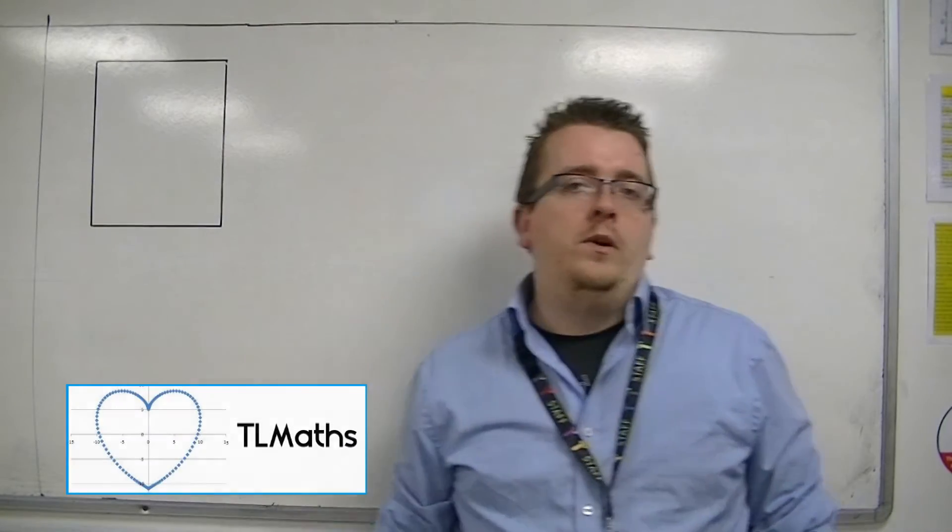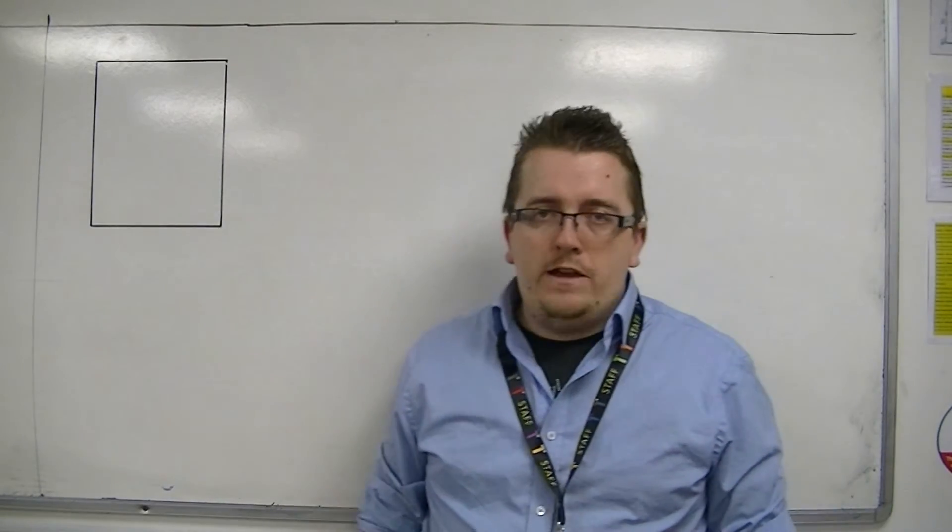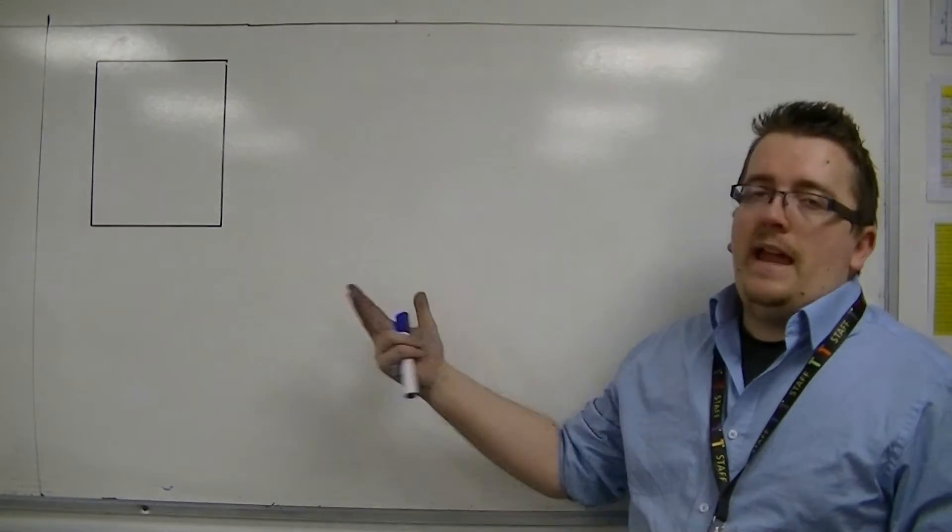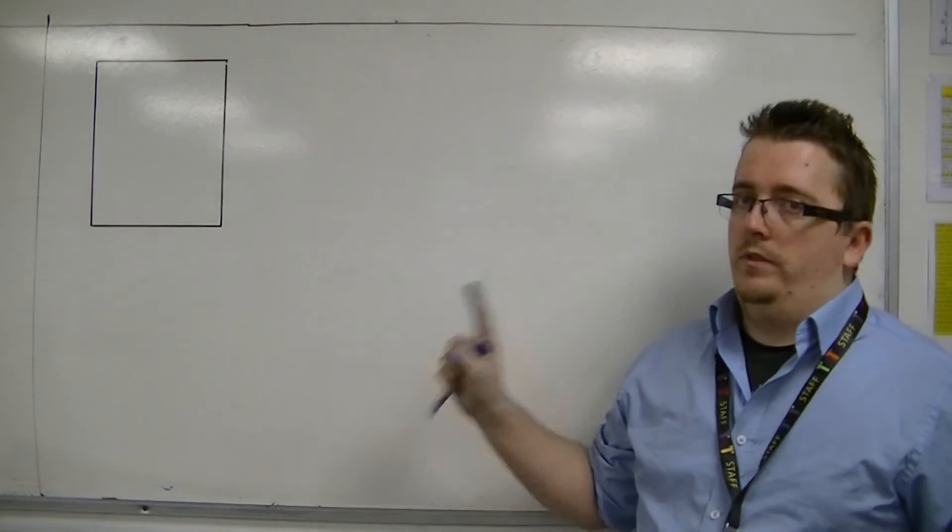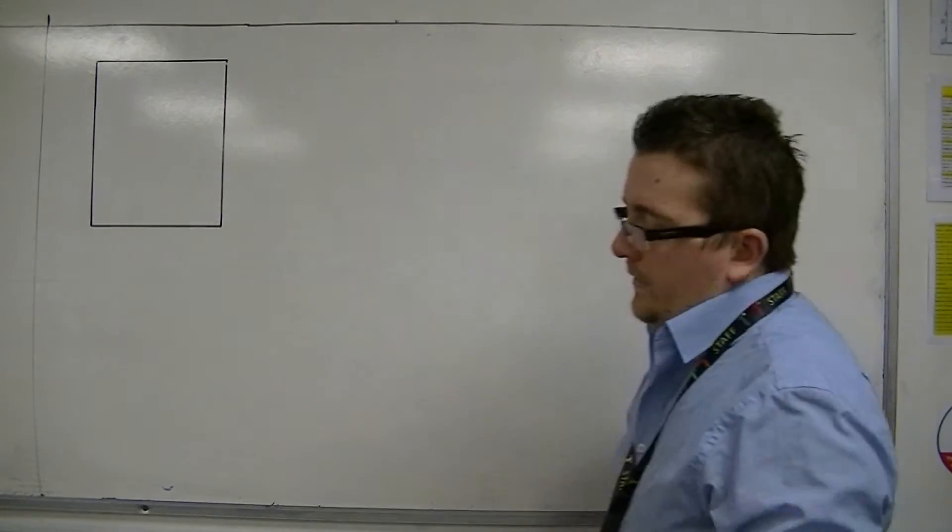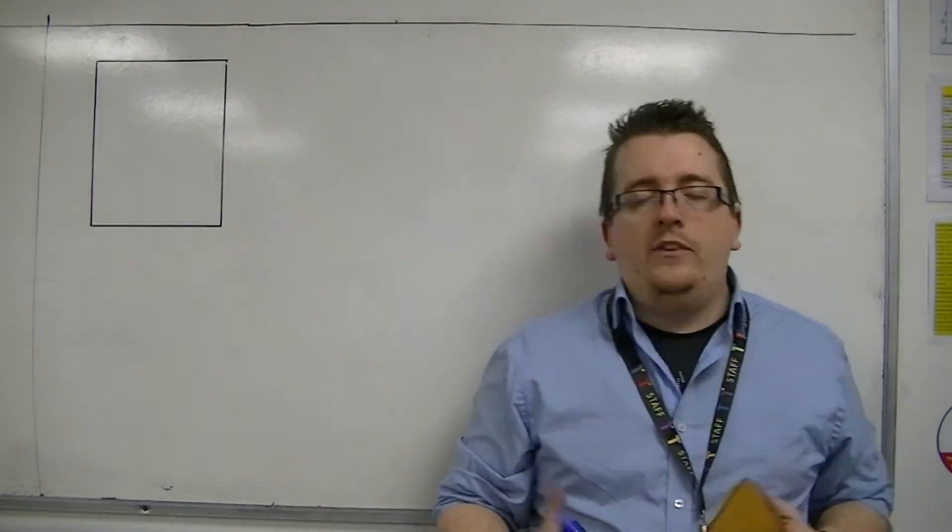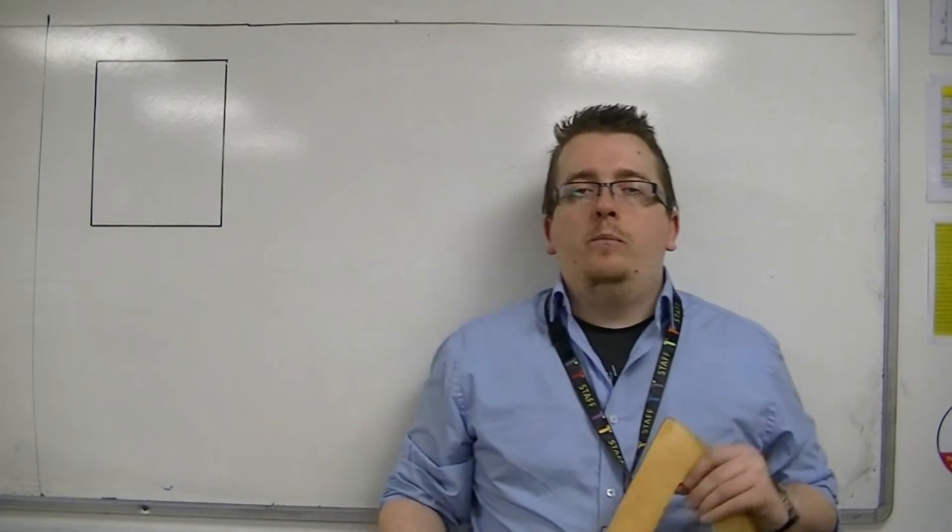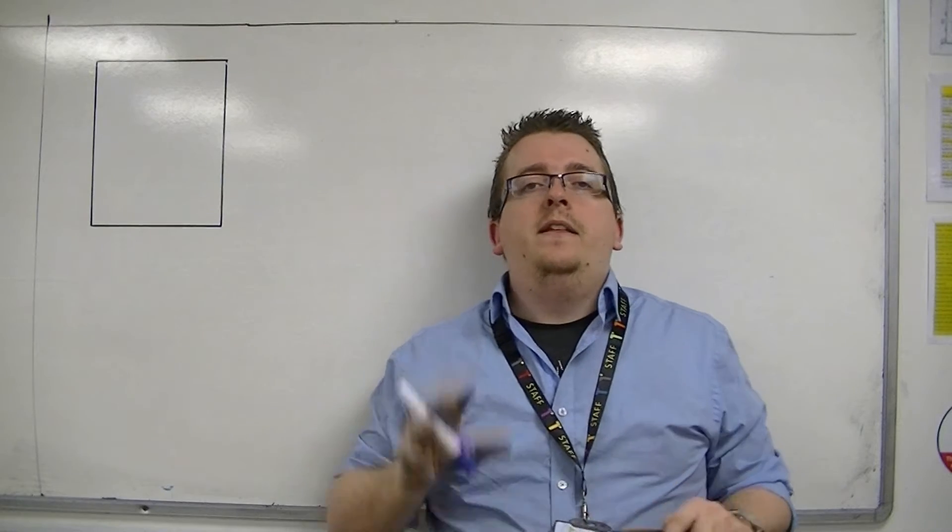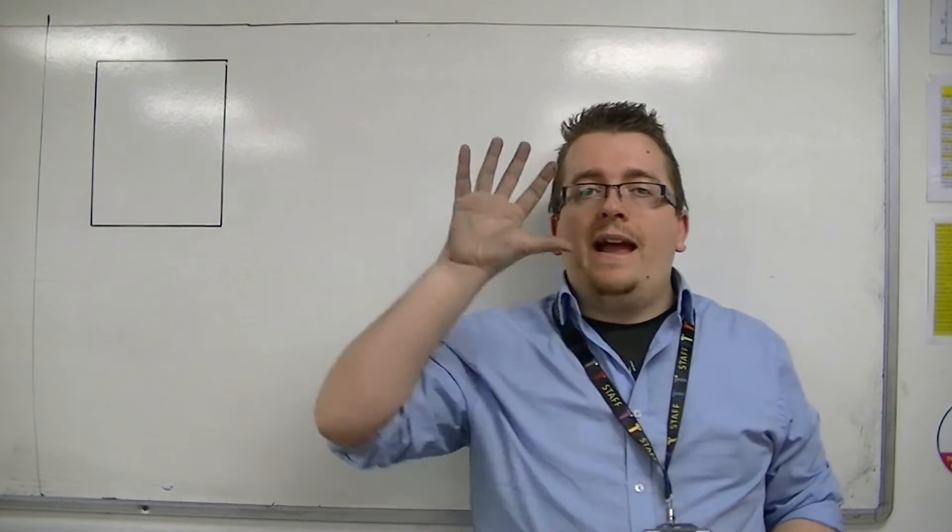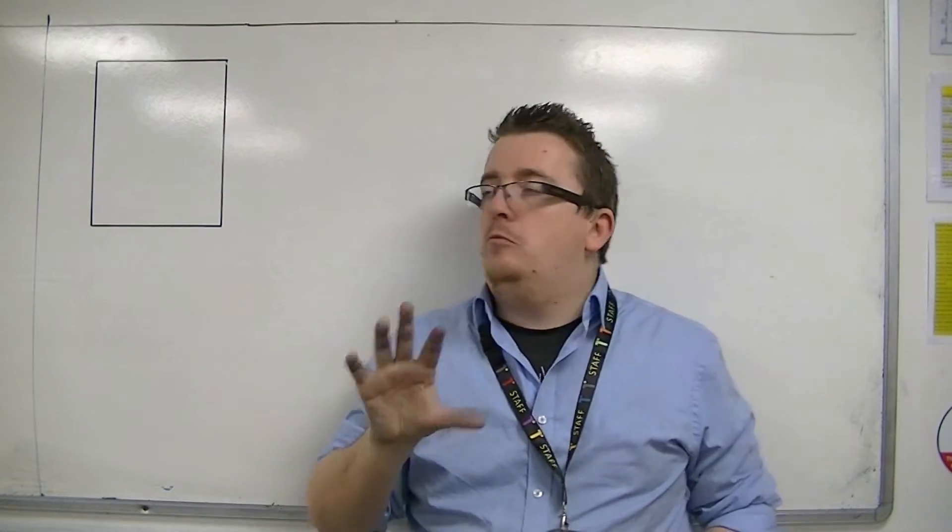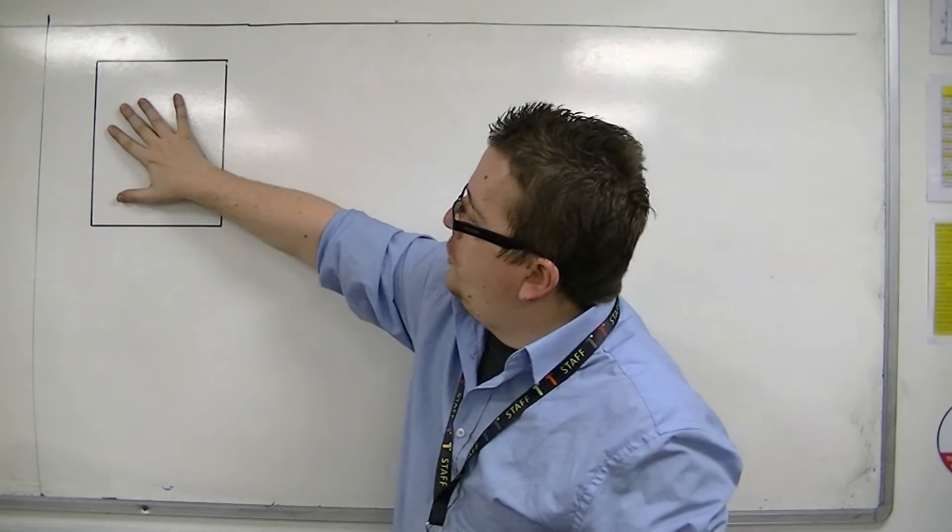In this video, I'm going to be looking at area, starting off with the area of a rectangle like this. With the area of a rectangle, area is different to perimeter in that perimeter is looking at the length around the outside of the shape. The area is looking at how much space the shape takes up, how much space is within that shape.